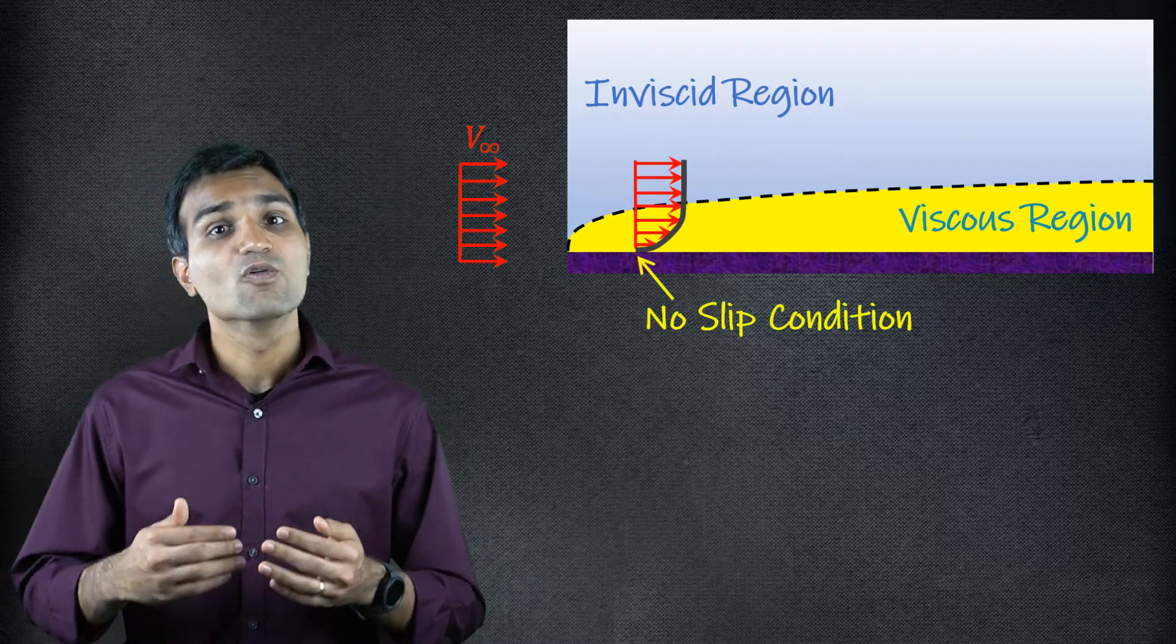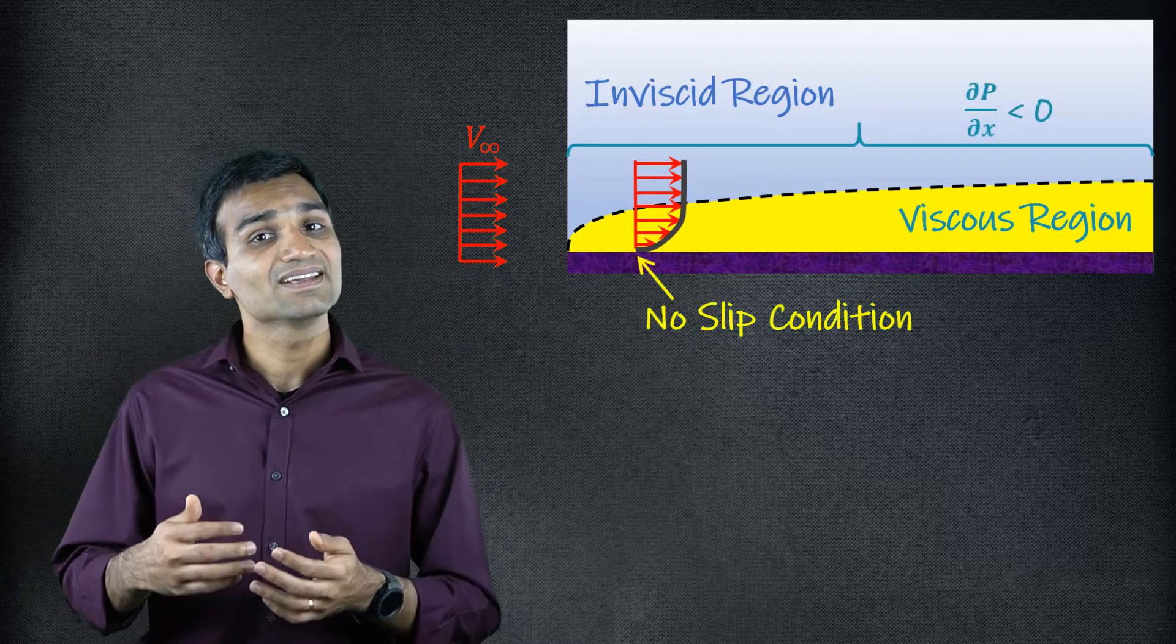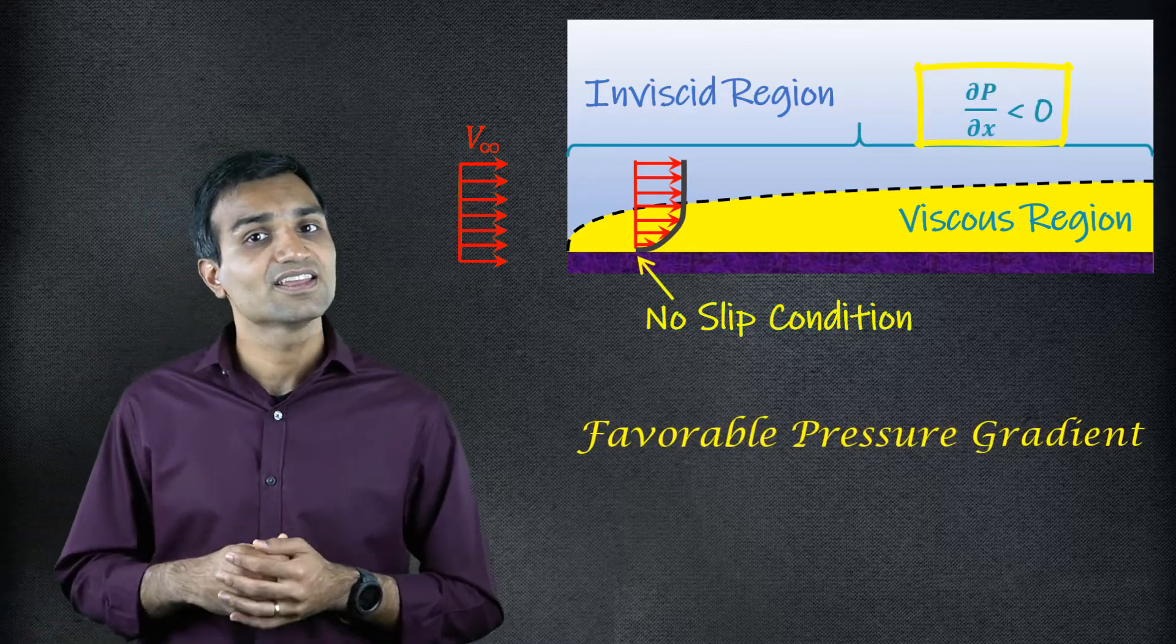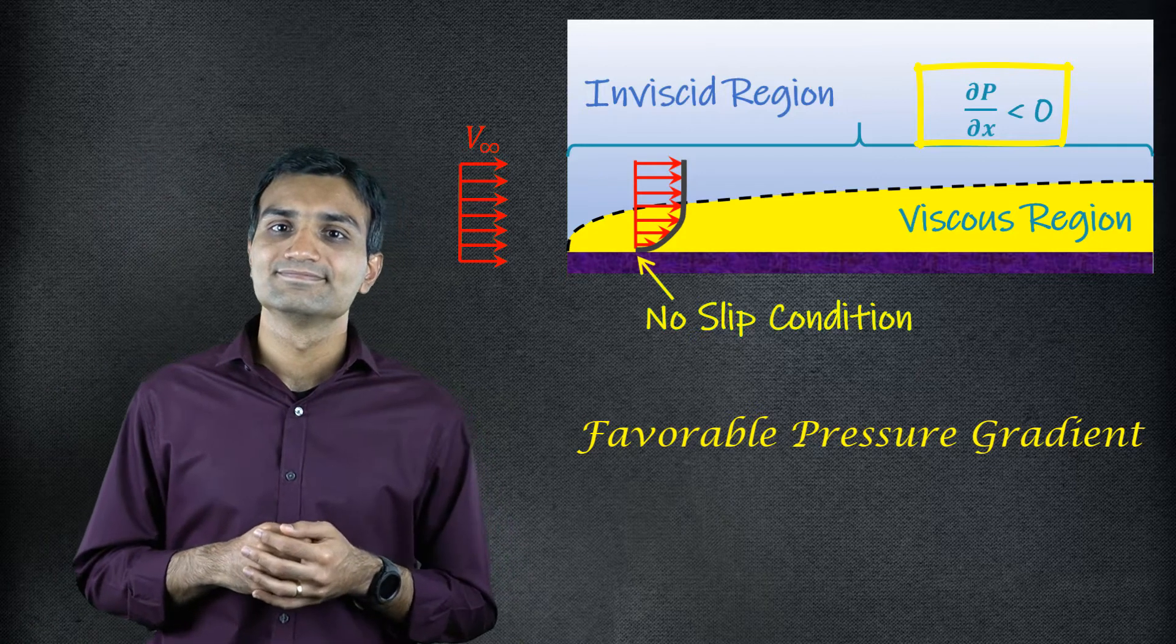For the flow over a horizontal plate, the pressure gradient along the plate is continuously decreasing and remains favourable. Fluid flow cannot separate under these conditions and remains attached to the surface.